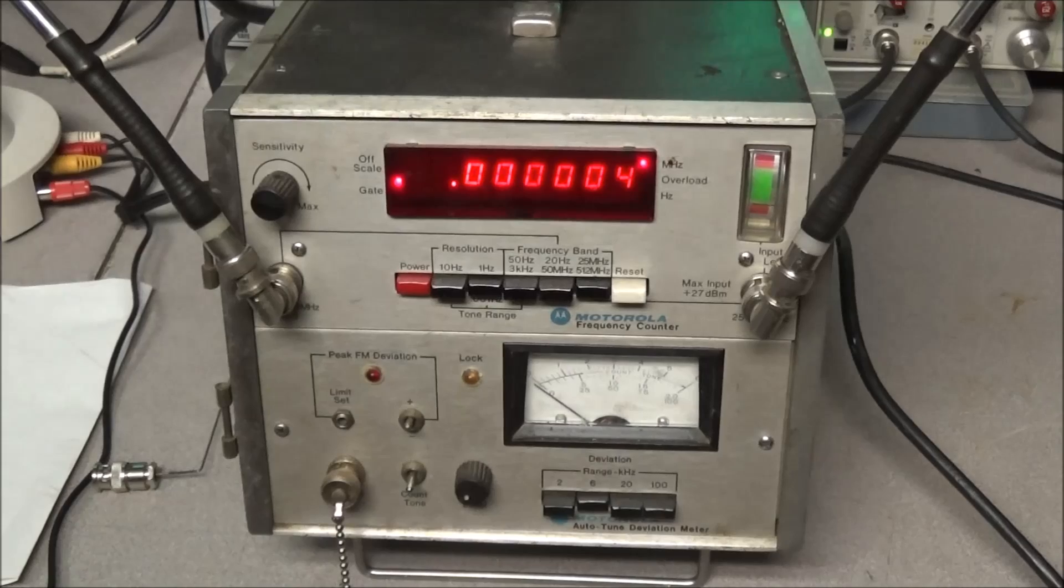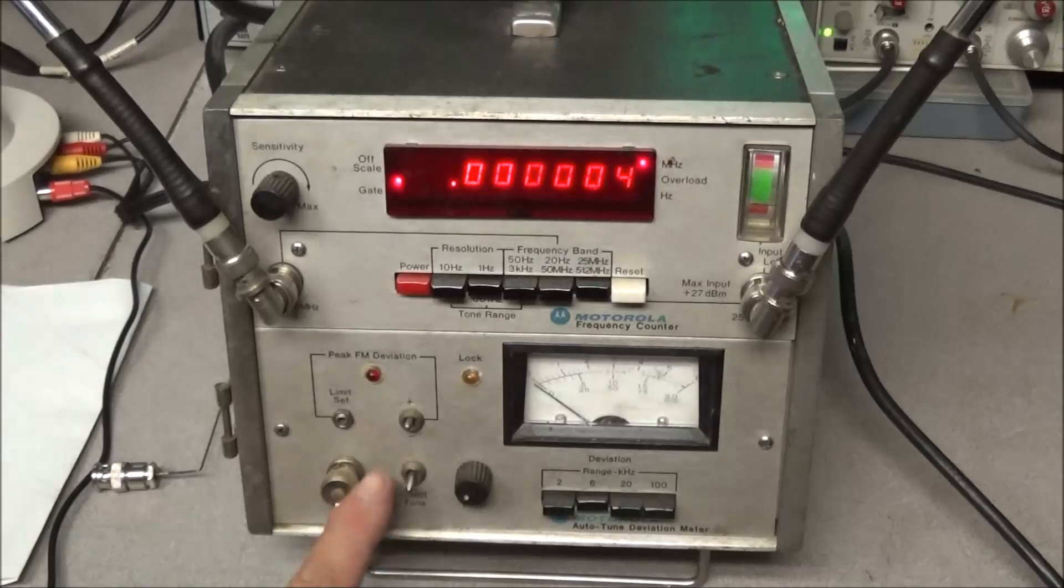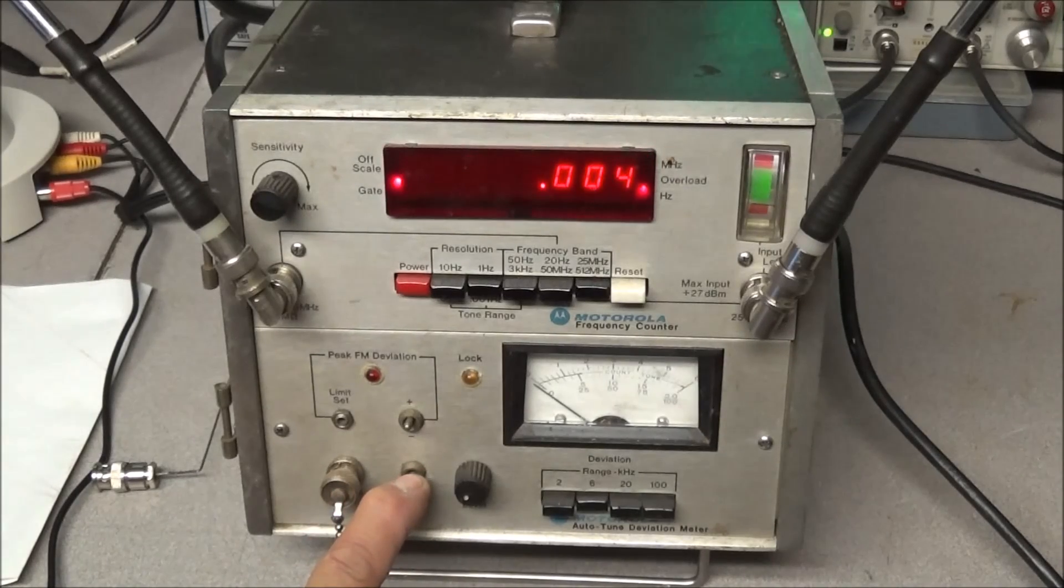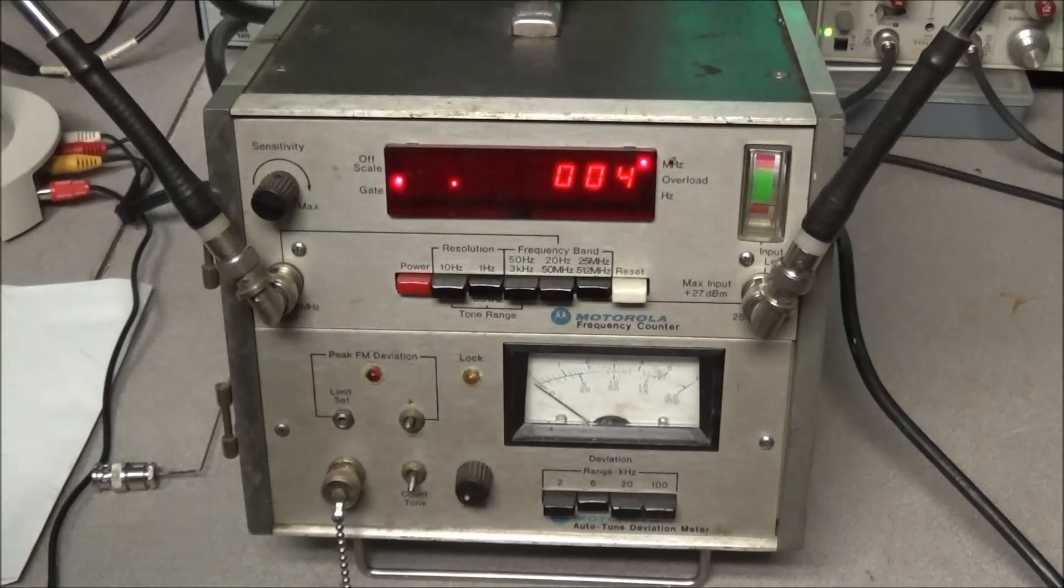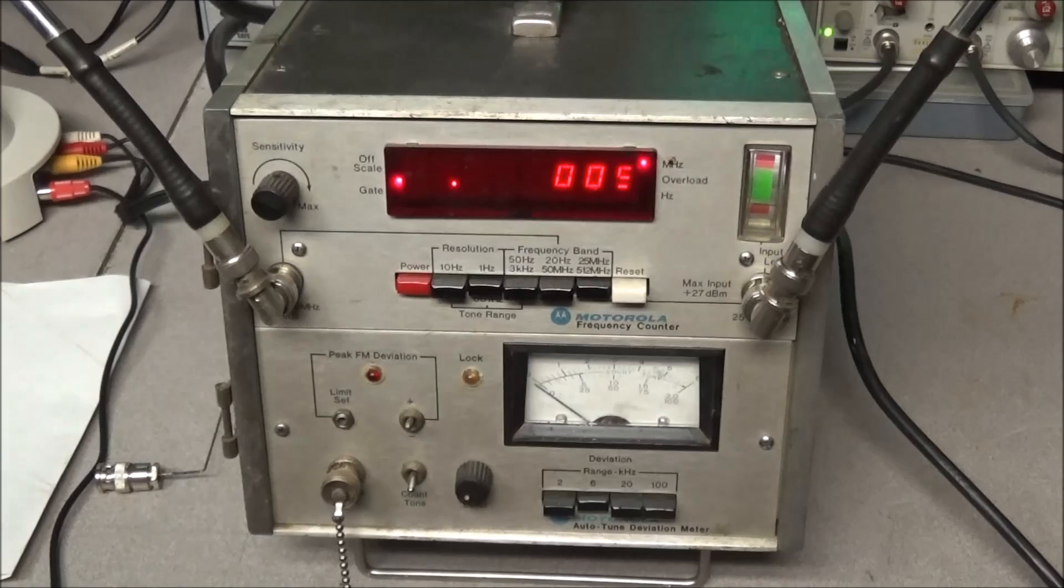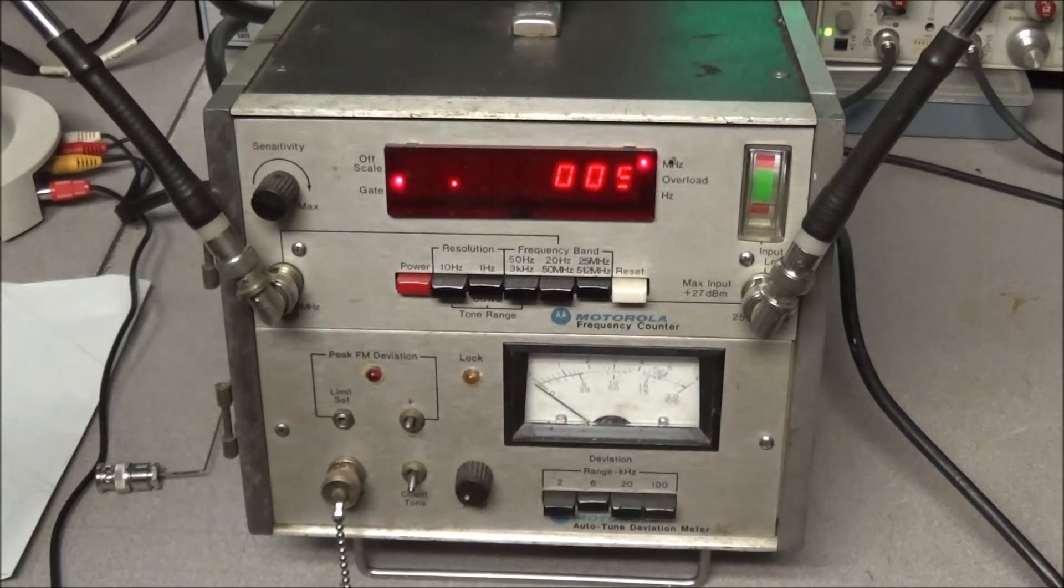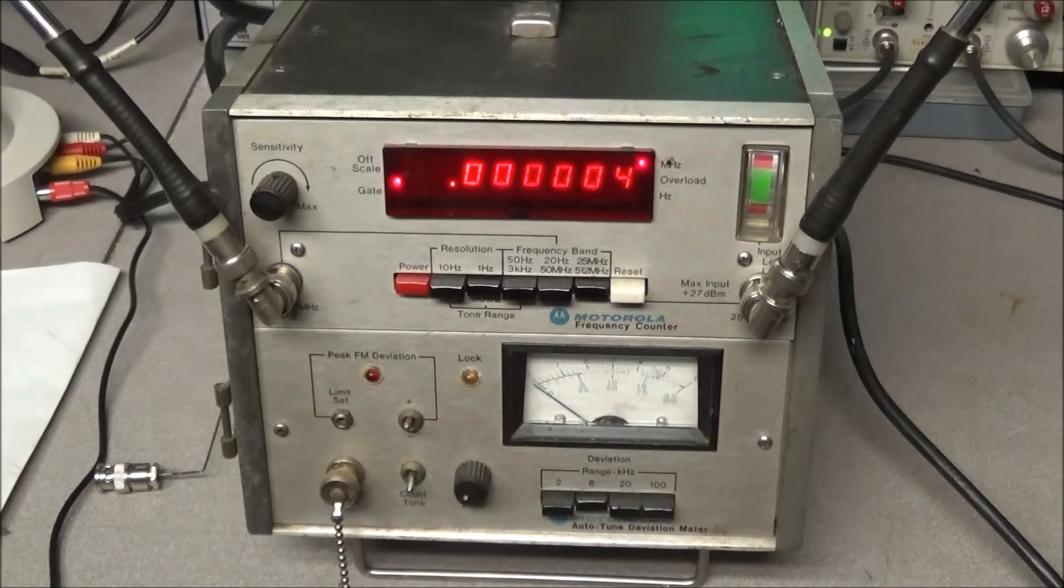So one thing that I really used to like about this unit was that you could key your radio and come down here and hold the count tone button down. As soon as it locked, it will give you the PL tone or CTCSS tone of what the radio was transmitting. That was a big help, especially when someone brings in a transmitter and you just need to do a quick test on it. Like I say, if anyone has any information...